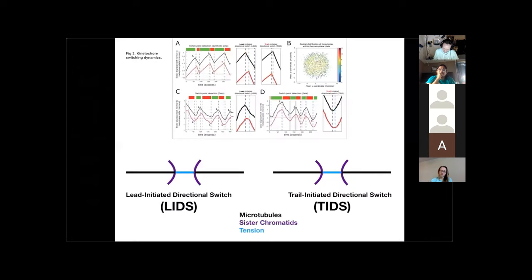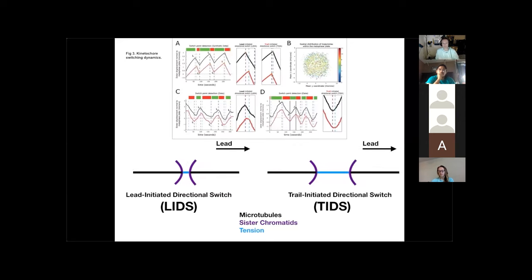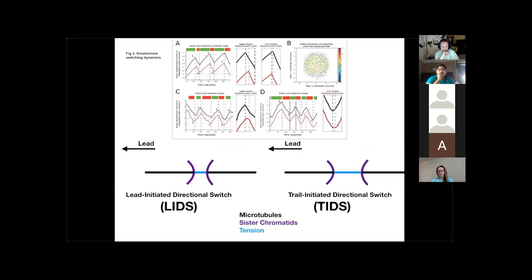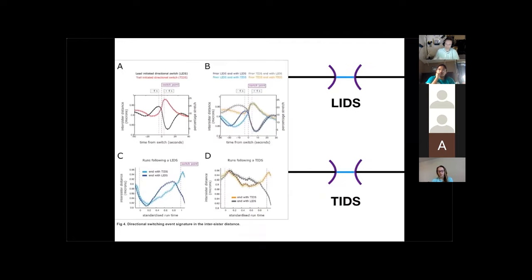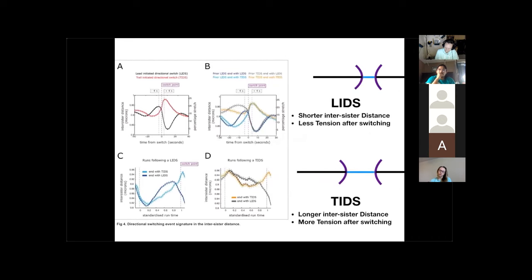In figures 3 and 4, they examine the distance between sisters before and after switching directions, depending on whether the leading or trailing sister changes direction first. This is a common theme — leading versus trailing — referred to as lead-initiated directional switching, LIDS, or trail-initiated directional switching, TIDS. Figure 4 shows that when the leading sister changes first there is a lower distance between the two sisters, and when the trailing sister changes first there is a higher distance. Since the distance between sisters has a positive correlation with tension, LIDS have lower tension compared to TIDS.